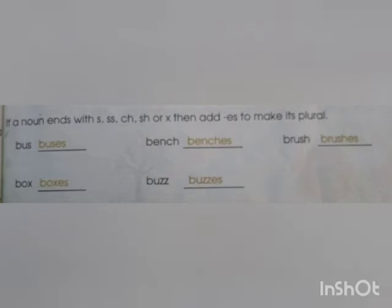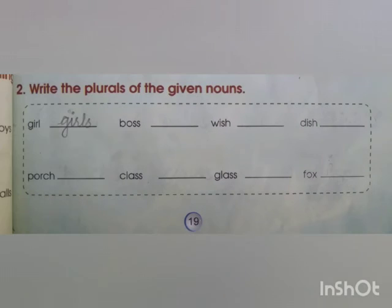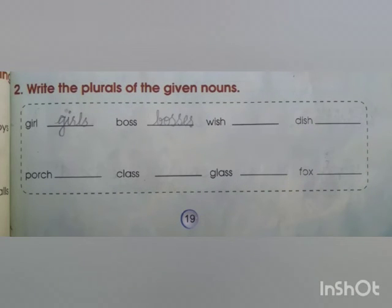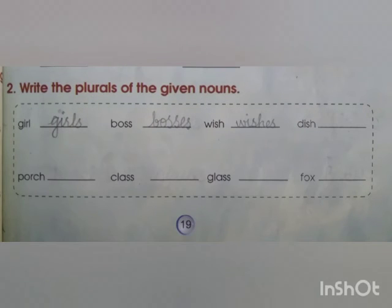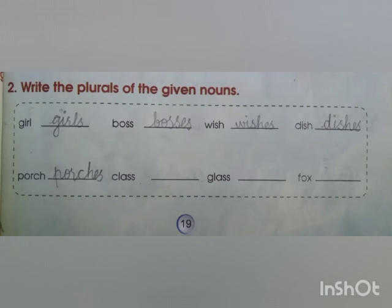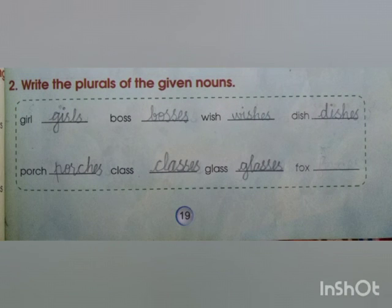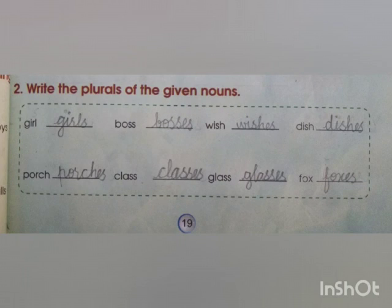Box → boxes. Now write the plurals of the given nouns: girl → girls, boss → bosses, wish → wishes, dish → dishes, porch → porches, class → classes, glass → glasses, and fox → foxes.